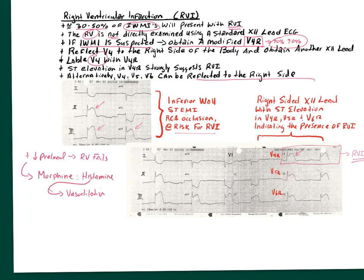Normally, decreasing preload during a STEMI might be beneficial — the heart doesn't have to work as hard. But if you have a failing right ventricle, medications that inhibit the ability to build preload — like morphine — could be potentially harmful, since treatment involves fluid boluses to force blood through.